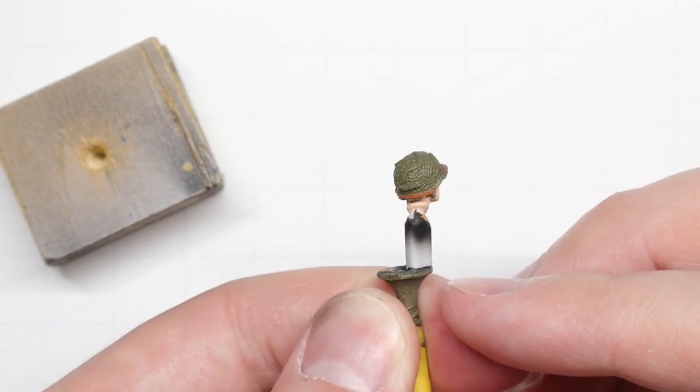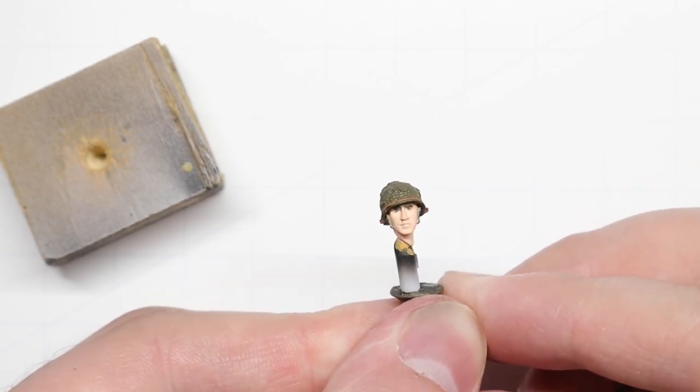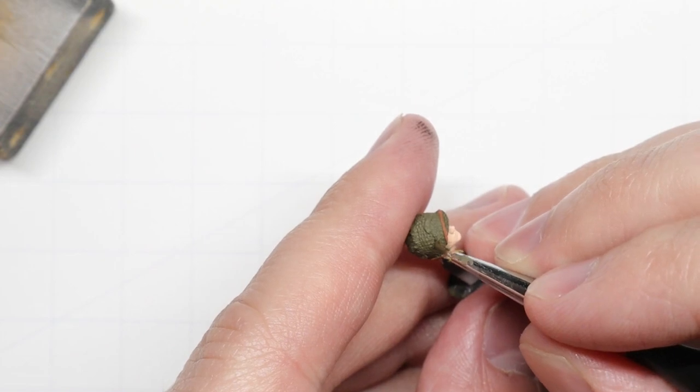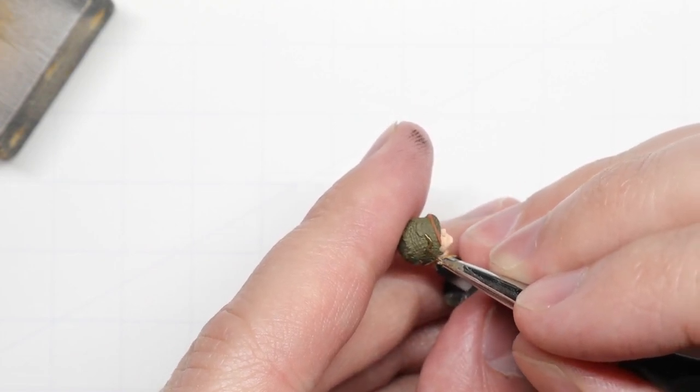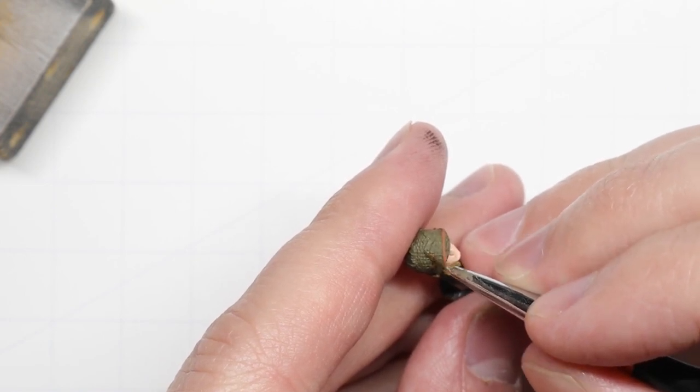With that complete, we're going to paint up those camouflage strips that were woven into the helmet netting. You can really use any earth tones you like for this to add a little variety and interest to your figure. I chose a brown, a green, and a khaki as you see here.